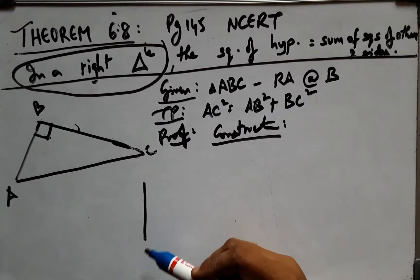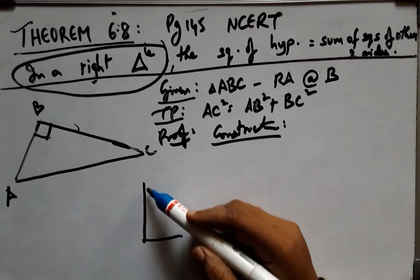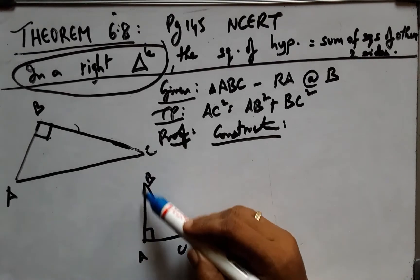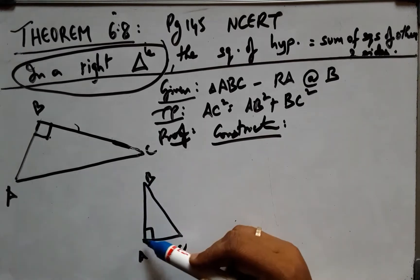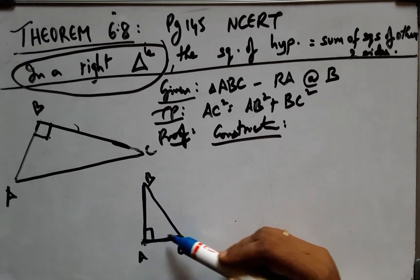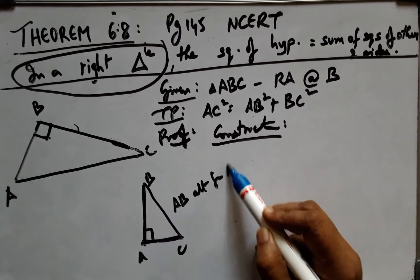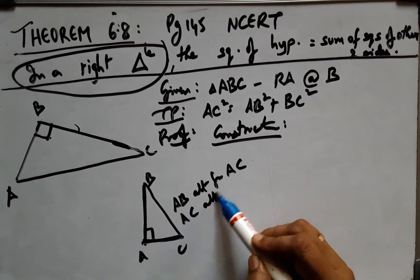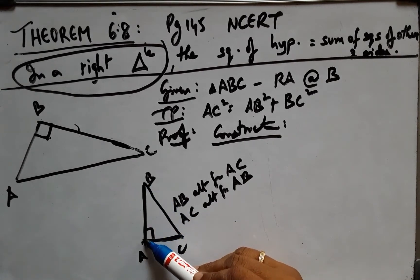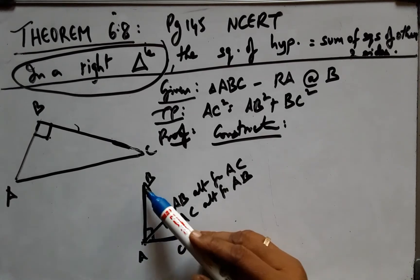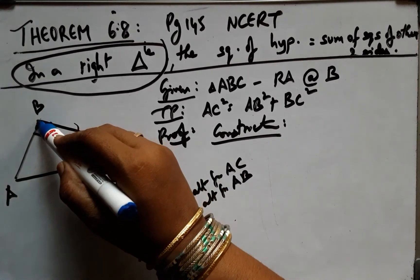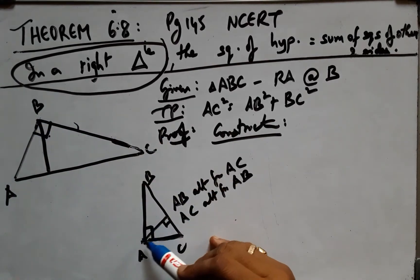We have a concept from altitude and median class. In a right angle triangle, the altitude from the right angle to the hypotenuse creates relationships. AB is the altitude for base AC, and AC is the altitude for AB. From the right angle, we drop a perpendicular to form an inside triangle.